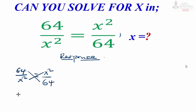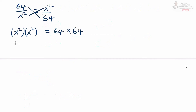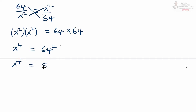We have x squared multiplying the other x squared equals 64 multiplied by 64. As we simplify, this is the same as having x to the power 4 equals 64 squared. On the left hand side we have x raised to power 4, and 64 is the same as 8 raised to power 2, but we have another power which is 2.